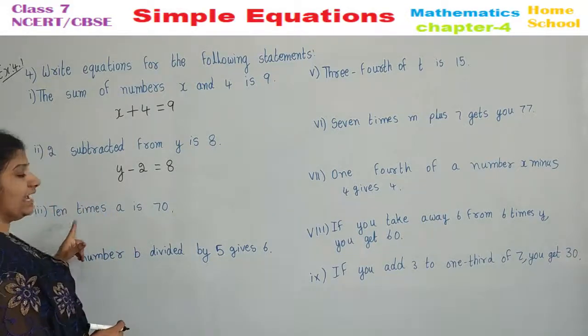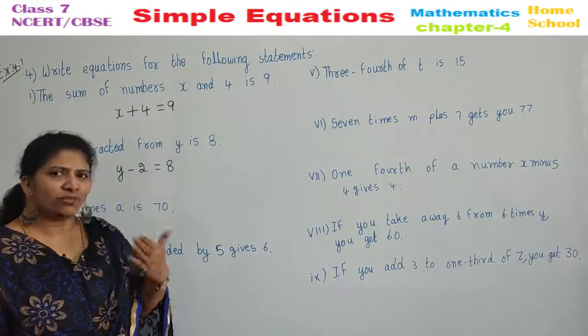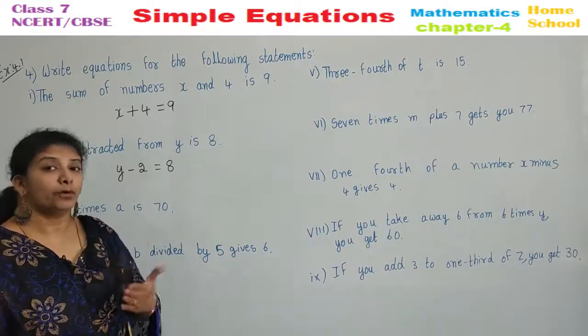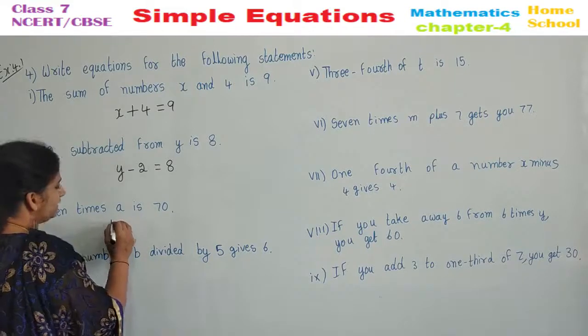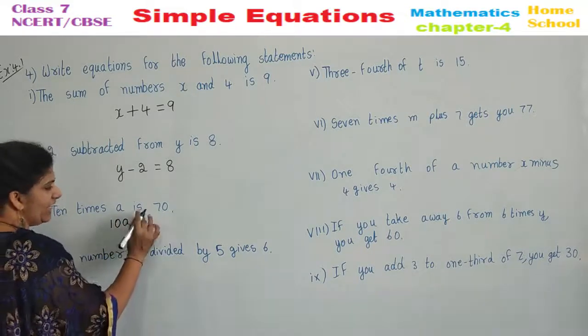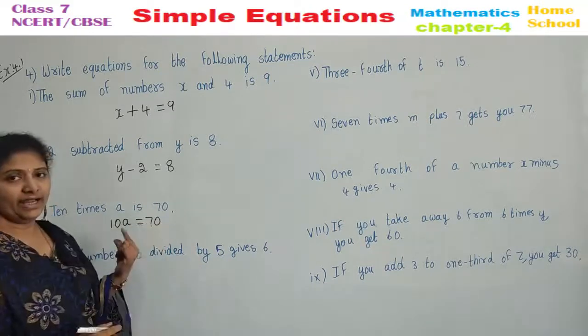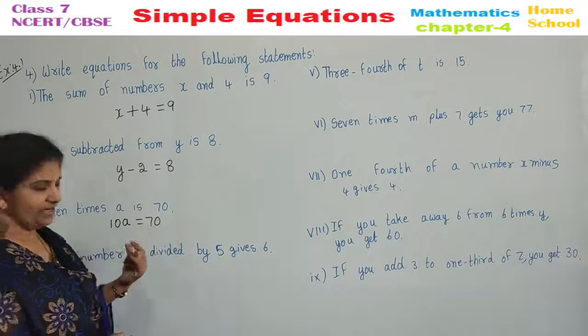Third one. 10 times A. Times. If you get a word times, what you should remember? Product. 10 times A. 10 into A. 10A is equal to 70.